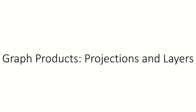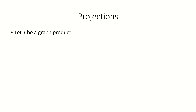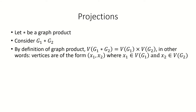Today we're going to look at projections and layers, which are concepts from the theory of graph products. Say we have a graph product, which we'll denote by this times symbol. To begin, let's consider the product of two graphs, g sub 1 and g sub 2. Whatever our product is, the vertex set of the product graph will be the Cartesian product of the vertex sets of g sub 1 and g sub 2.